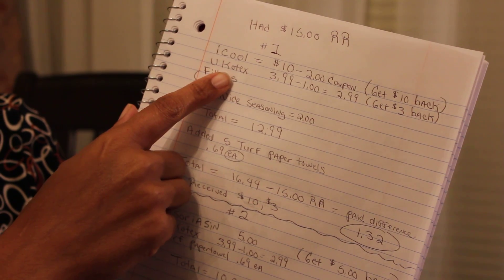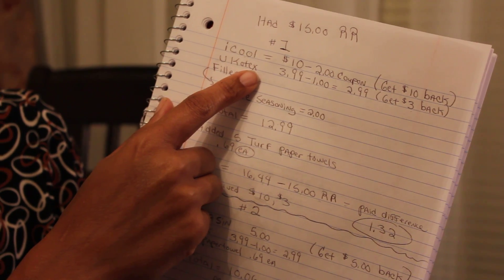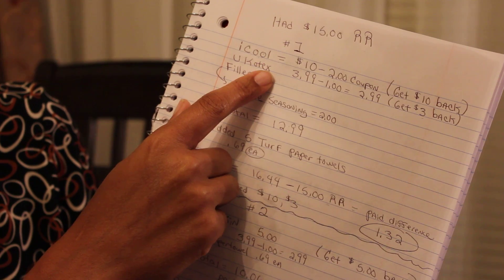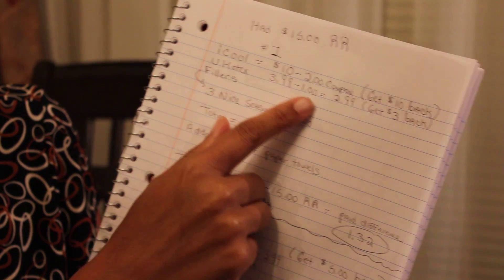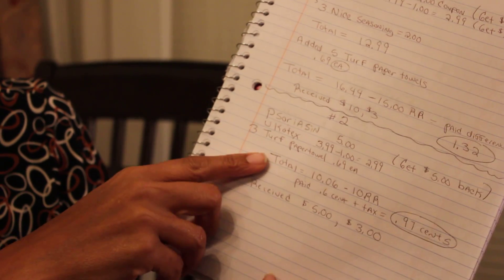Also, I had a couple coupons for the iKool, I had $2 off, so I actually paid $8 and I still got $10 back on that. The U by Kotex, I got that off their website. Their website has a PDF file so it may still be available. They'll give you a dollar off any Kotex items. This is perfect to use with this. It only cost me $2.99 then I got $3 back.